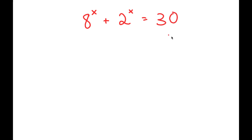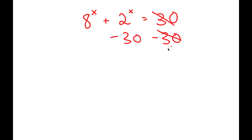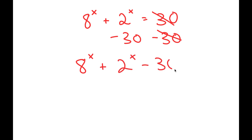To solve this, I'm going to first start by subtracting 30 on both sides. These two cancel out, and I get 8 to the power of x plus 2 to the power of x minus 30 is equal to 0.